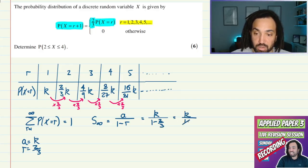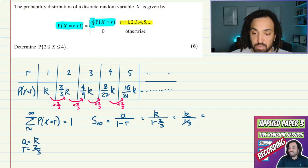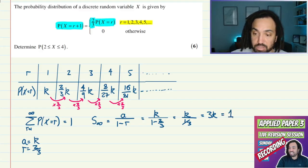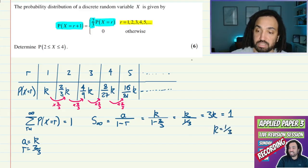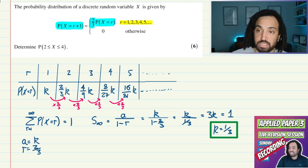So this summation is equal to k over one minus one-third, which is equal to three k. And what did we say that the sum was equal to? Well of course it's equal to one because we know that when we add up all the probabilities it will equal one. So therefore we get that k is equal to one third. Great, let's box that up and then we can answer our question.